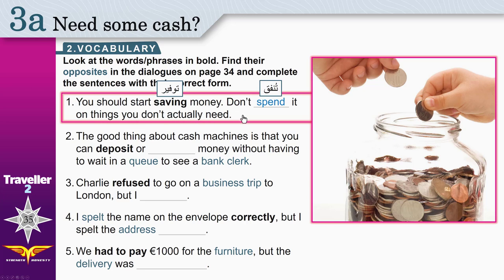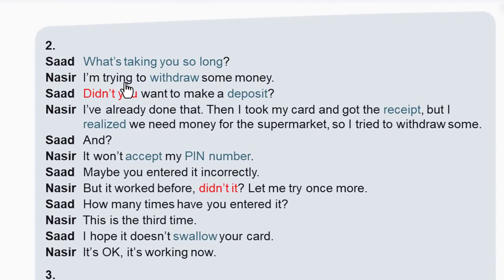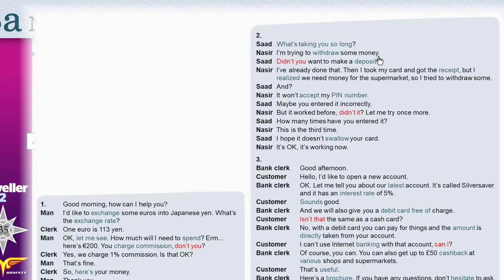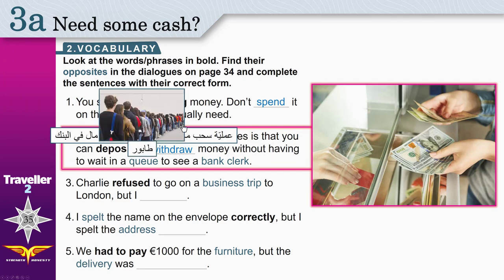Buy things you don't need. The good thing about cash machines is that you can deposit — when you deposit, you put money in your bank account — or you can withdraw. That means you take money from your account without having to wait in a queue, in a line like this, to see a bank clerk.